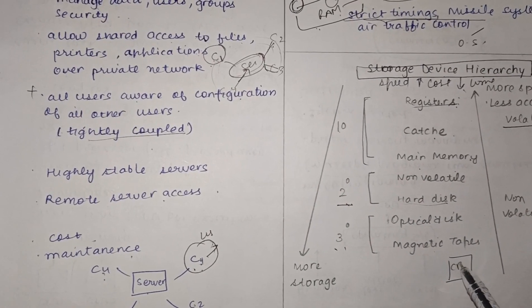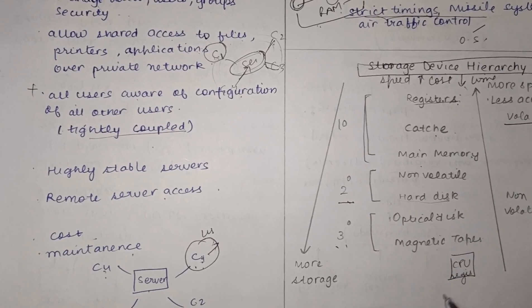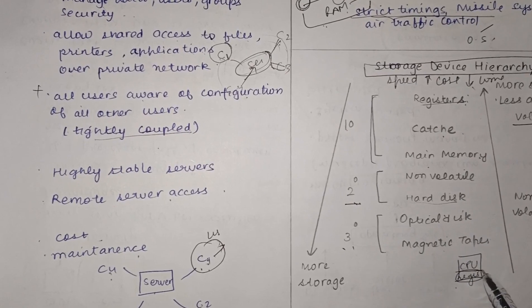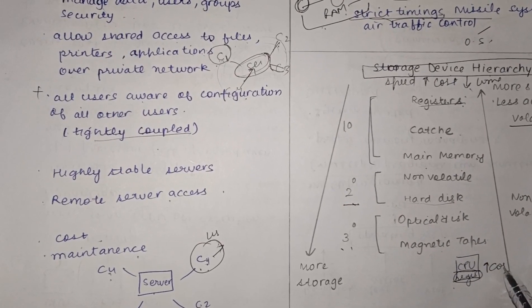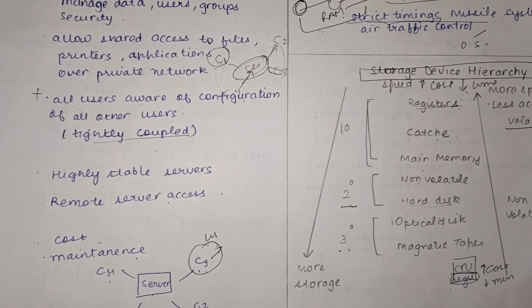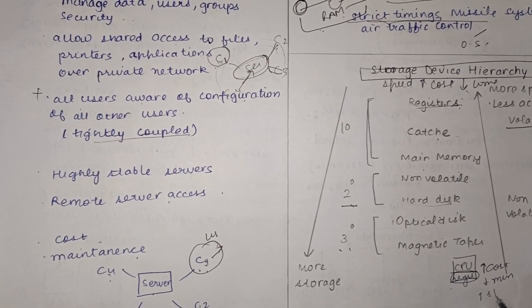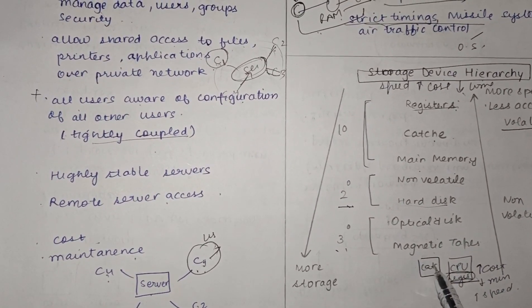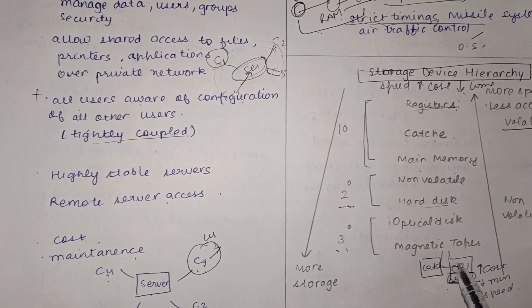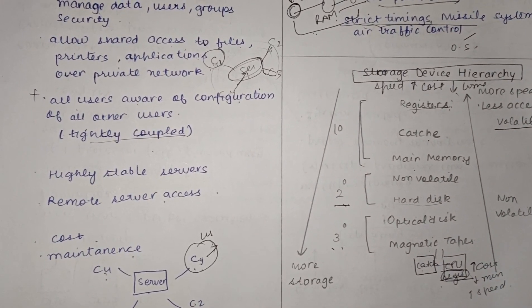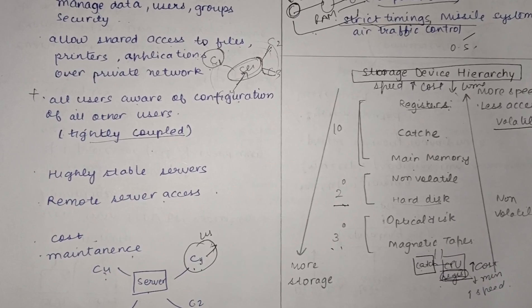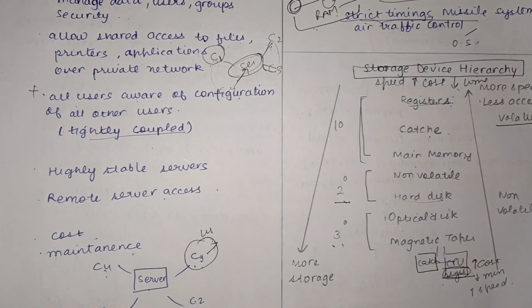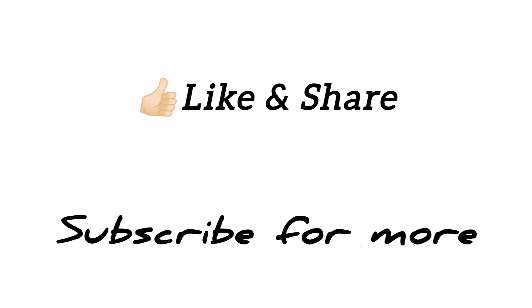To explain the cost difference: CPU registers are present inside the CPU and are the fastest processing units, so they have maximum cost, minimum storage, and maximum speed. Cache memory is located in or very near the CPU. As distance from the CPU increases, cost decreases, storage capacity increases, and speed decreases. This storage device hierarchy illustrates the trade-off between speed, cost, and capacity in a computer system.